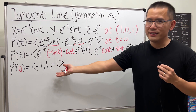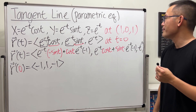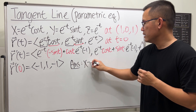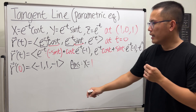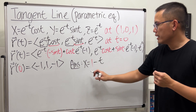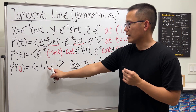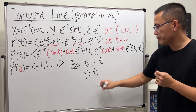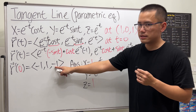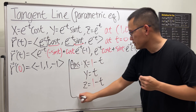So we get three very nice numbers: negative 1, 1, and negative 1. Now we can construct our answer. X equals starting at 1, plus negative 1 times T, which is 1 minus T. Y: the starting value is 0, so we just have 1 times T, which is T. And Z equals 1 plus negative 1 times T, so just 1 minus T. There we go, that will do it.